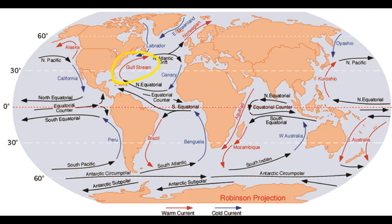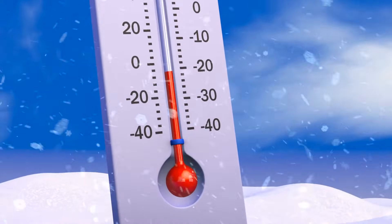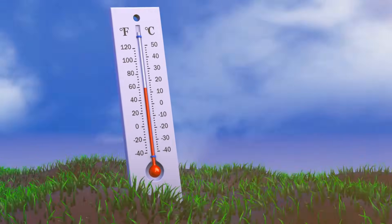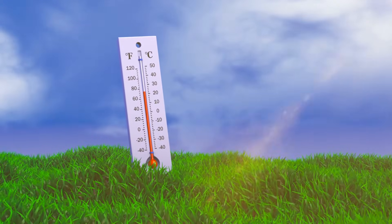For example, the Gulf Stream influences the eastern Atlantic shoreline of the United States by bringing warm, moist air. This helps warm the east coast and keeps it from completely freezing during the winter.